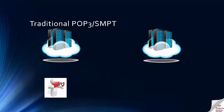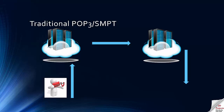Let's have some fun with some graphics and have a look at a traditional POP3 SMTP way of sending emails with the aid of this animation. The user on the left will send an email to their friend and the email is uploaded to the email program via their email server. The email server finds and communicates with the recipient's email server and sends the email on its way — remember, on its way anybody can read it. The email server then waits until the recipient's email server connects and will then download the email to their machine and the transaction is complete.